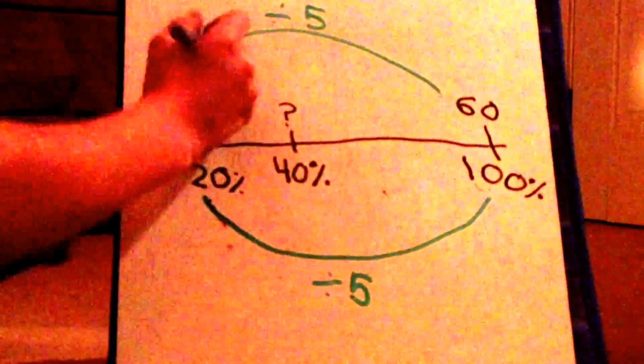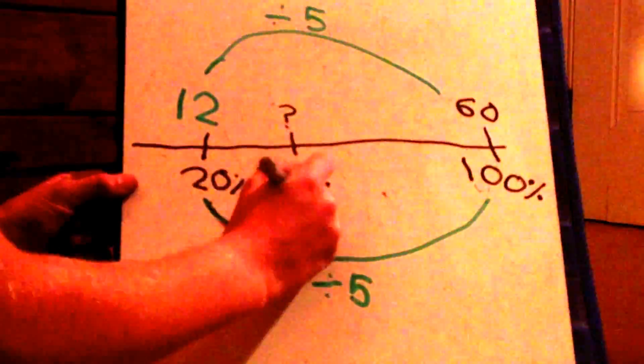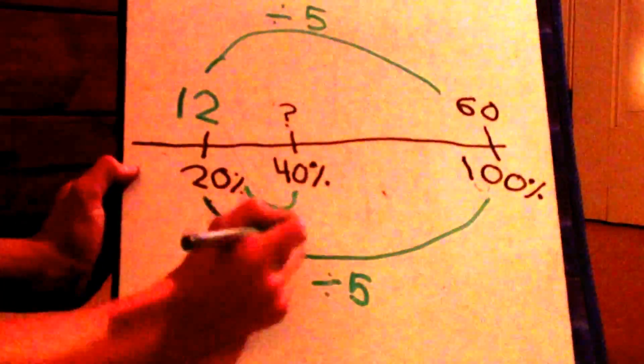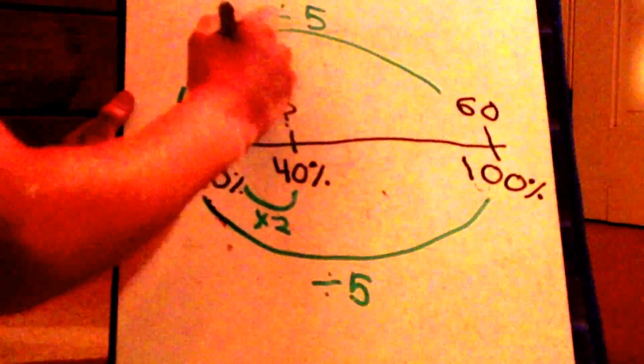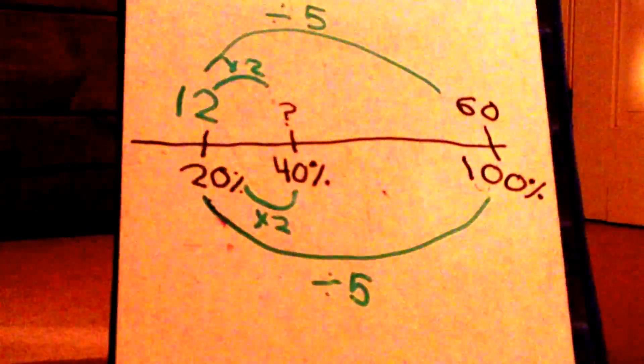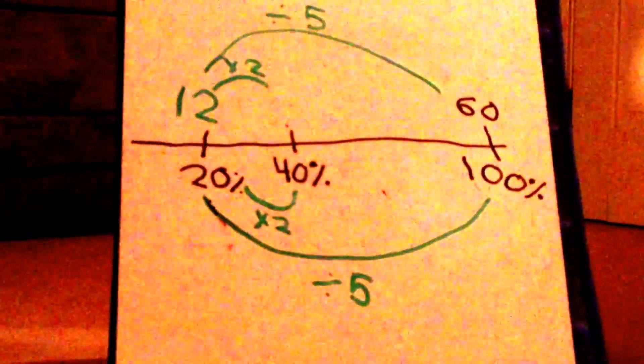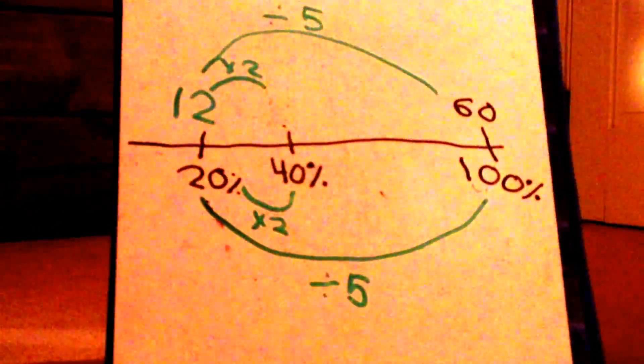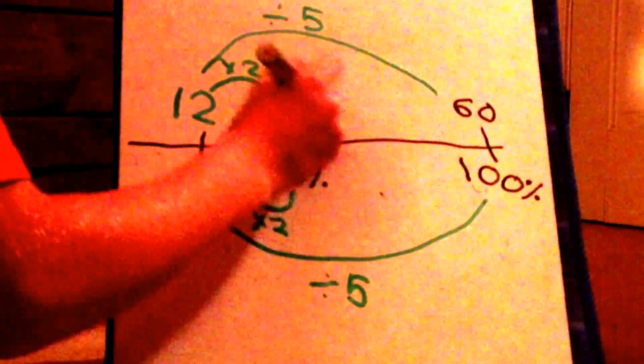And then after that, you'll notice that 20% of 60 is 12, so we have to multiply 20 times 2 to get 40%. So we do the same thing to the top number, which is 12, and 12 times 2 is 24.